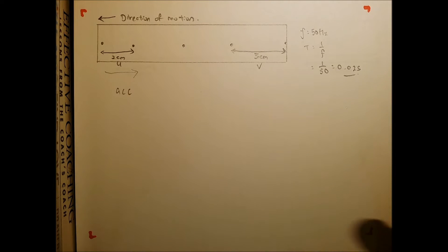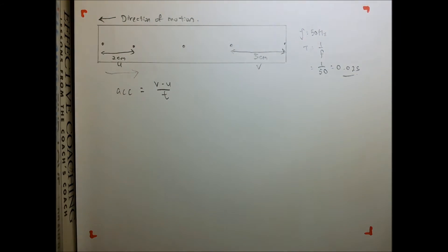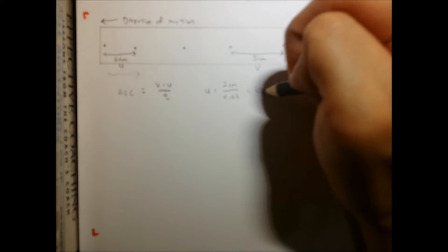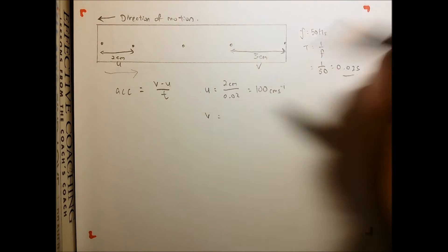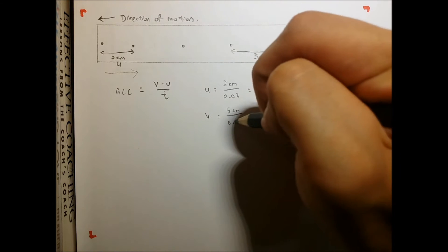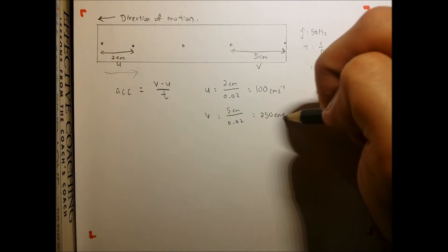The way to start ticker timer calculations is always the same if you want to calculate acceleration. Acceleration equals final minus initial divided by time taken. This is the overall formula. For initial velocity: 2 cm divided by 0.02 seconds gives 100 cm per second. Final velocity: 5 cm divided by 0.02 seconds gives 250 cm per second.